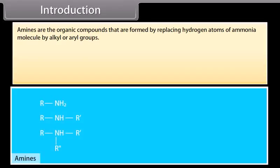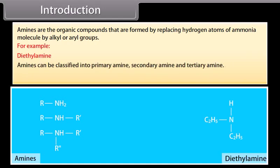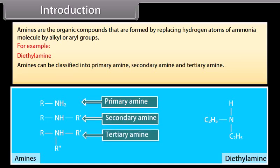Amines are organic compounds formed by replacing hydrogen atoms of an ammonia molecule with alkyl or aryl groups. For example, diethylamine. Amines can be classified into primary amine, secondary amine, and tertiary amine.